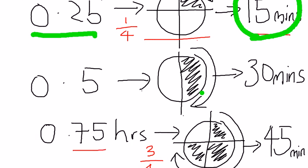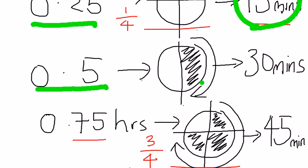So, the same thing goes for 0.5. 0.5, in this case, is actually half. So, half of a clock, and that would be 30 minutes.